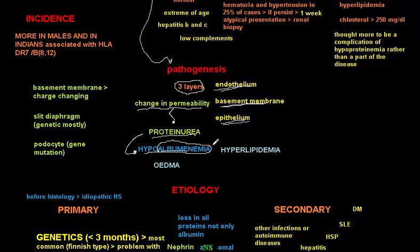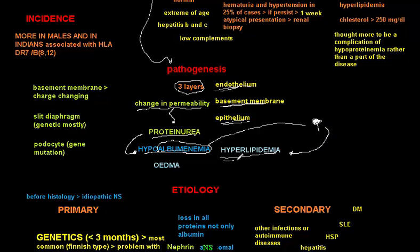The liver, which is the factory of albumin, will try to compensate for the hypoalbuminemia by making more proteins. This compensatory process will also lead to increased lipid production, resulting in hyperlipidemia. As a result of the hypoalbuminemia, we will also have edema.